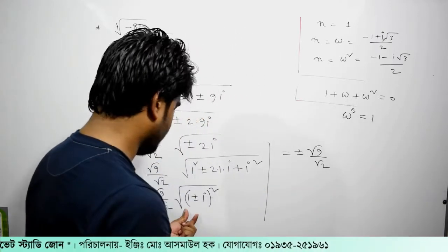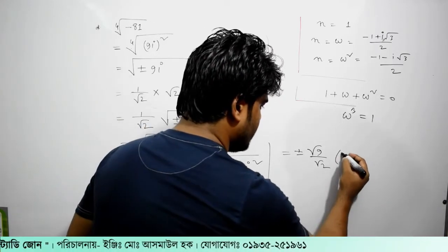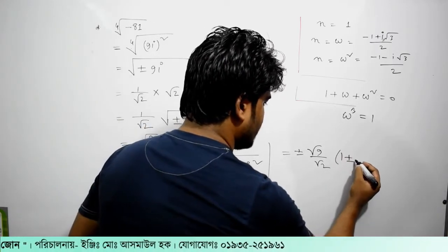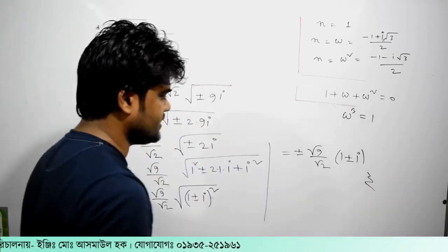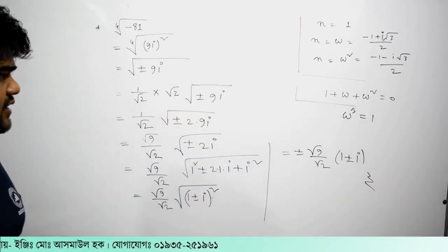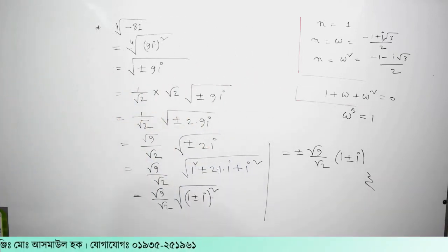What is 1 plus minus i? That is the answer. So here you might see there are two results in the region.